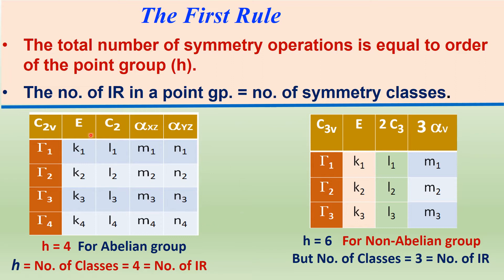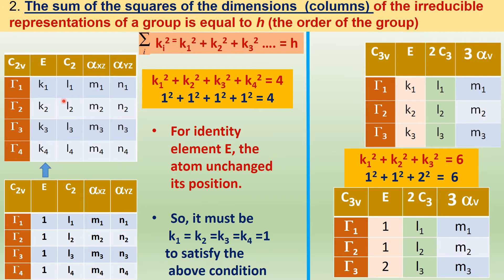How the character table is constructed is derived by using the Great Orthogonality Theorem. The four simple rules are used to obtain the characters. We will see now how the characters — the values for k1, l1, m1, n1, etc. — are obtained. According to Rule 2, the sum of the squares of the dimensions of the irreducible representations of a group is equal to the order of the group H.